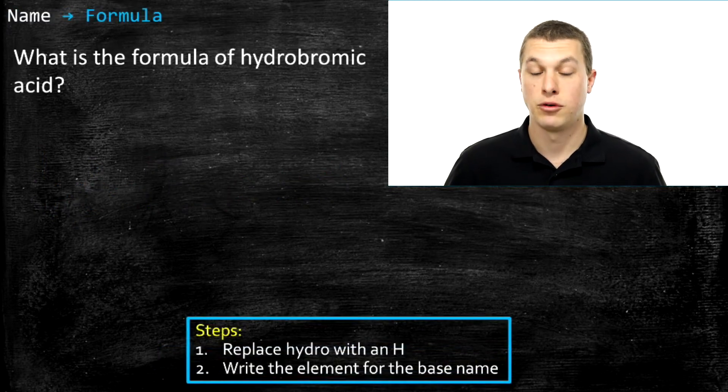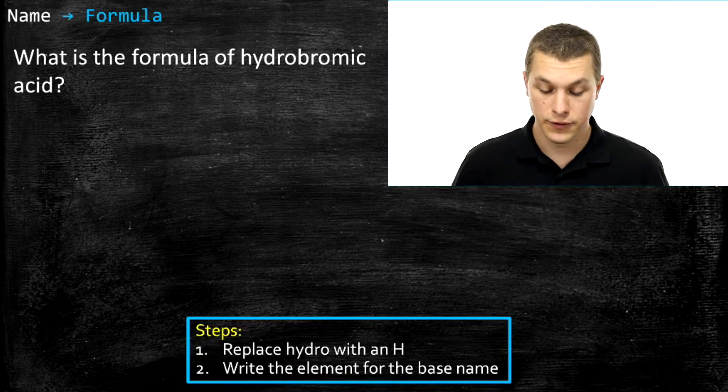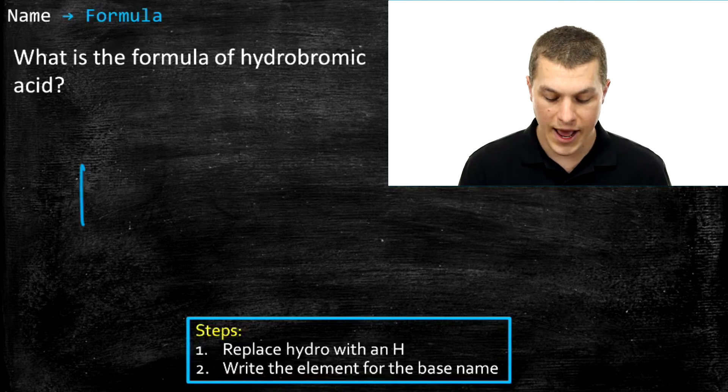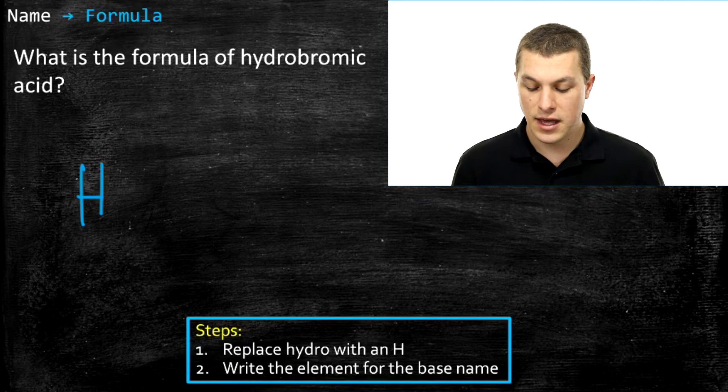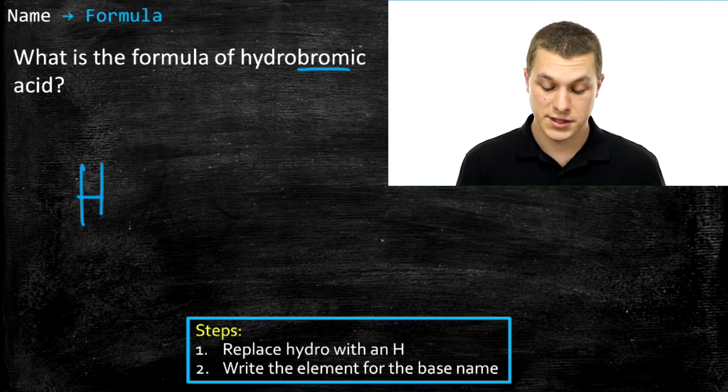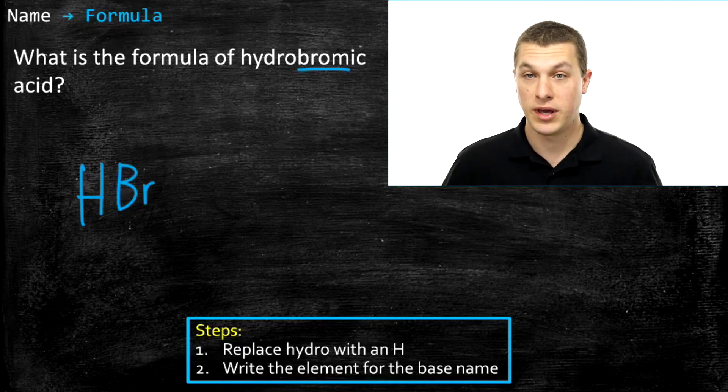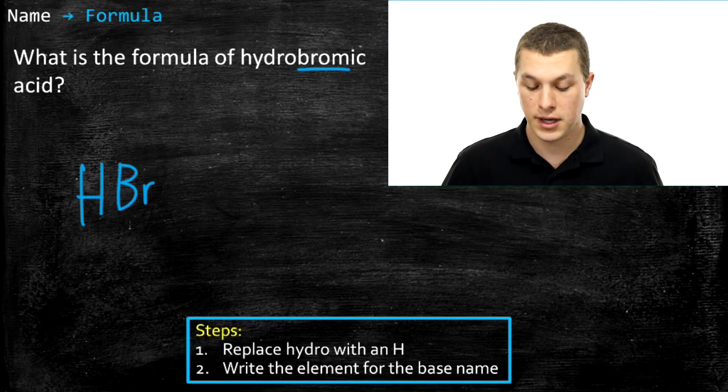Here we have hydrobromic acid. And so all we're going to do is where we see hydro, we're going to write an H. So the first thing we're going to write for this guy is H, because we know that our acids have to start with the element hydrogen. And then we identify what element is in there by looking at the base name. So here you see brome. That's the base name of bromine, which has the symbol Br. So we write Br. And that is in fact our formula. We have HBr which is called hydrobromic acid.